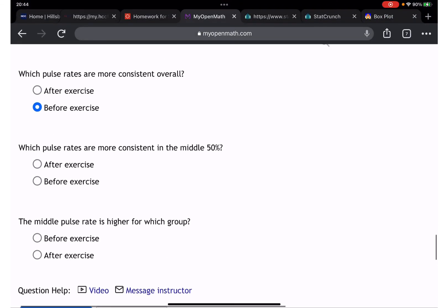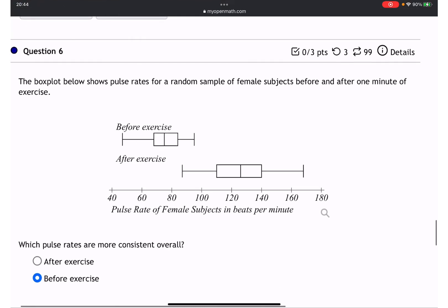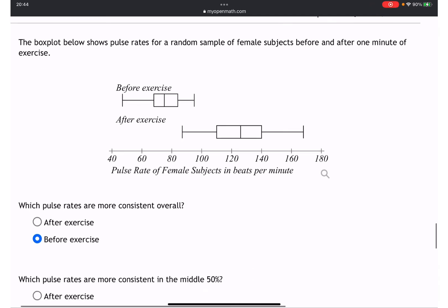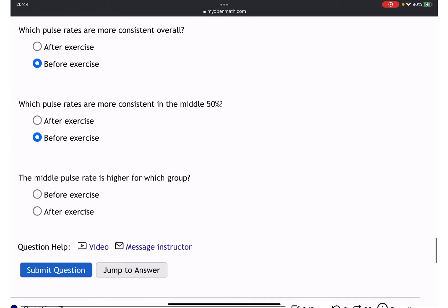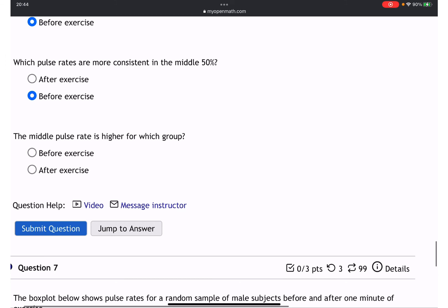This is box plot - here comes minimum, here comes maximum. It's more stretched, so in this case the answer is going to be before exercise.